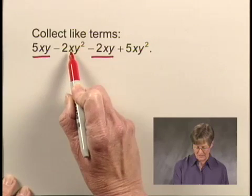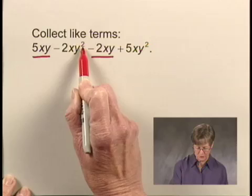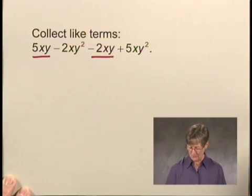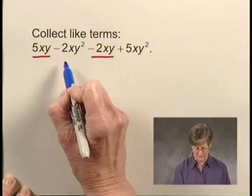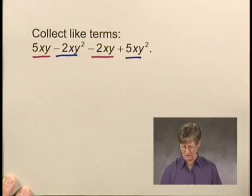Now this term is not a like term with either of these because I have x and y, but the exponent here is 2, not 1, and the same thing can be said for this one. But if I look at those two terms that I haven't underlined yet, they each have x to the first power and y to the second power. So these two terms are also like terms.